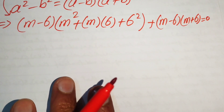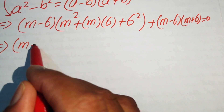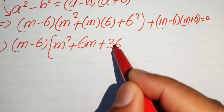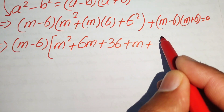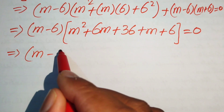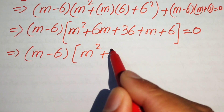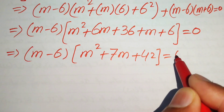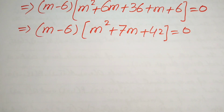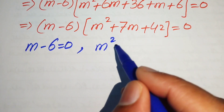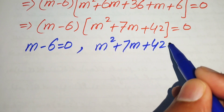We see that (m − 6) is a common factor, so we factor it out. The remaining terms are m² + 6m + 6m + 36 plus (m + 6), which simplifies to (m − 6)(m² + 7m + 42) + (m + 6) = 0. This gives us two cases: m − 6 = 0, and m² + 7m + 42 = 0.